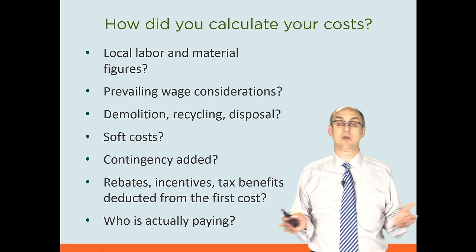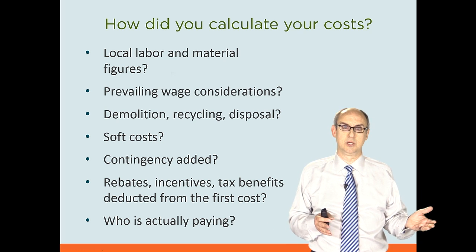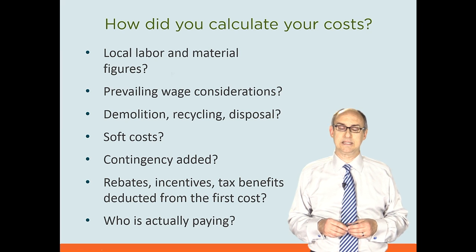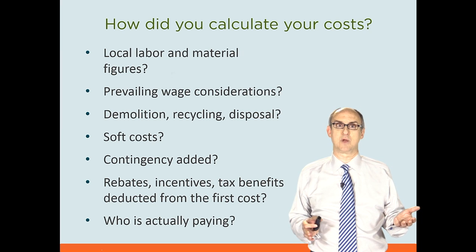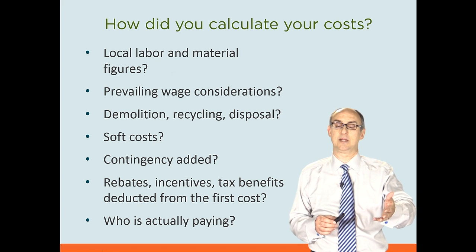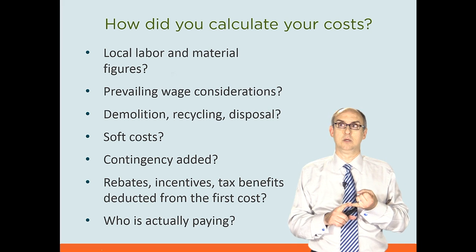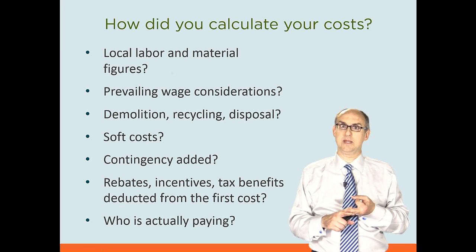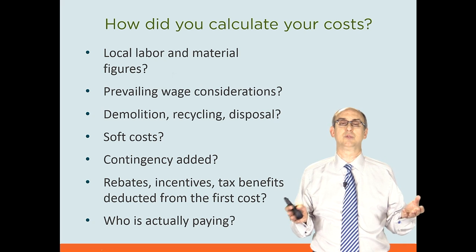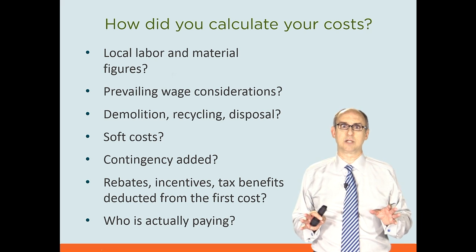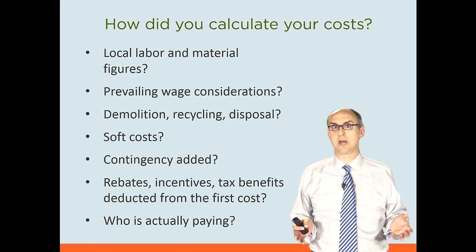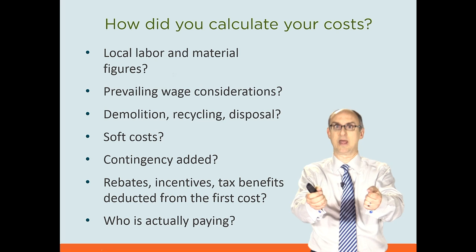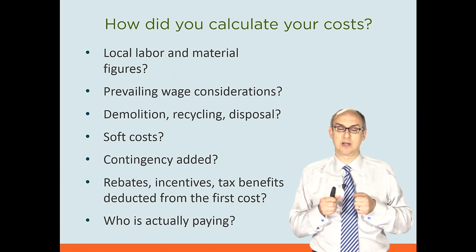In landlord-tenant settings, there's the issue of who's actually paying for the first cost. In most commercial leases, especially ones modeled on the BOMA — Building Owners and Managers Association — standard lease, it's not uncommon to have a clause saying landlords can't pass through capital costs to tenants, with three exceptions: costs necessary for government regulation, costs related to life safety, and costs related to improving energy efficiency or reducing operating expenses for all tenants. So a landlord could install energy efficiency projects and then claw that savings back from tenants in the form of additional rent.